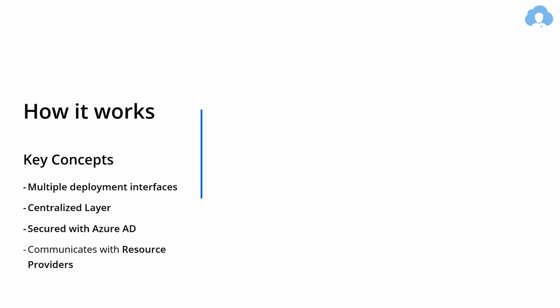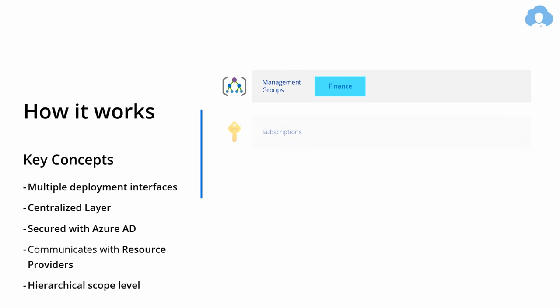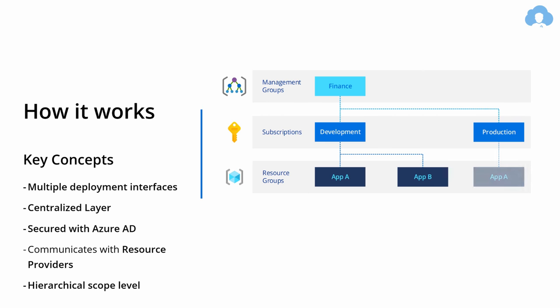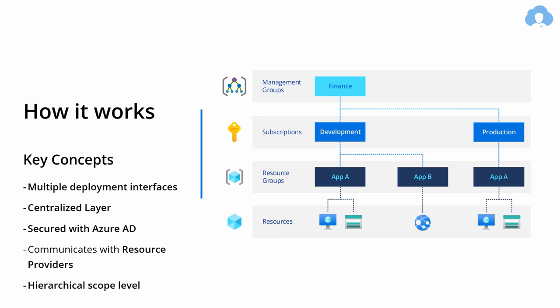In Azure, everything is managed using a hierarchical scope. This scope goes from management groups, where you group multiple subscriptions, to the subscription itself — a unit of billing. Usually you separate subscriptions into development and production environments. Each subscription contains resource groups, a logical grouping of resources usually representing your applications. And underneath, at the very lowest level, are resources. How you separate your management groups, subscriptions, and resource groups is really up to you — by regions, departments, applications, modules, or however you want.